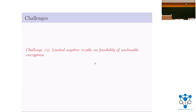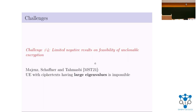The fourth challenge is that there are limited negative results on the feasibility of unclonable encryption. Bačkurs et al. showed that if you have an unclonable encryption scheme where the ciphertext density matrices have large eigenvalues, then this is impossible to achieve. So any unclonable indistinguishable encryption scheme must have ciphertext states with small eigenvalues.